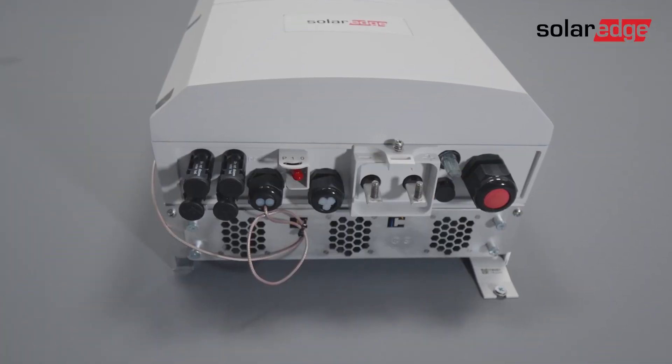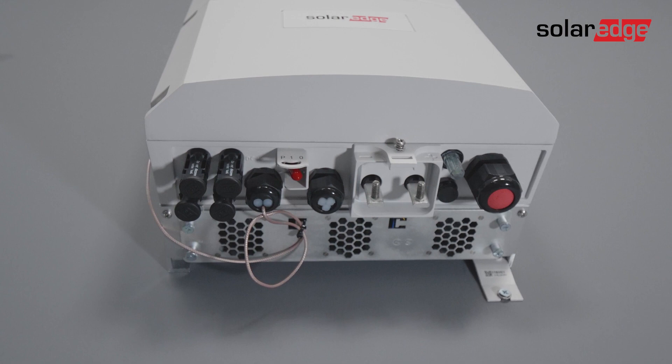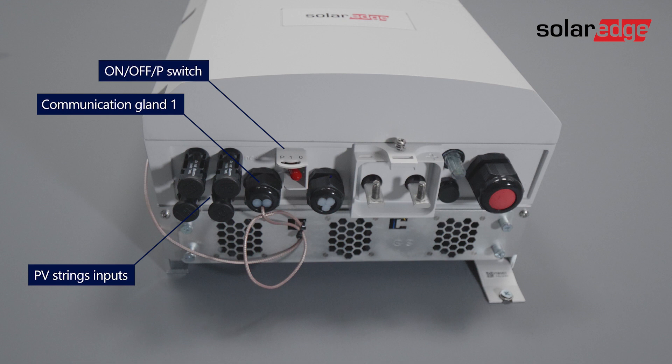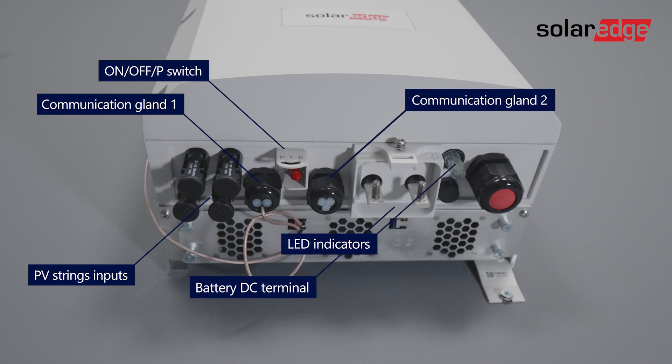Let's identify the inverter interfaces located at the bottom of the inverter: PV strings inputs, communication gland 1, on-off P-switch, communication gland 2, battery DC terminal, LED indicators, and lastly the AC input.